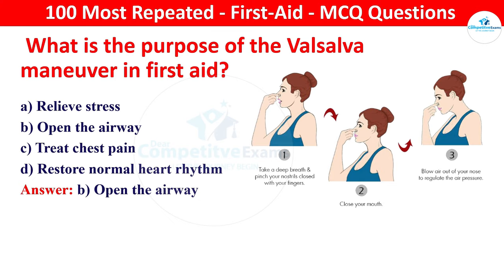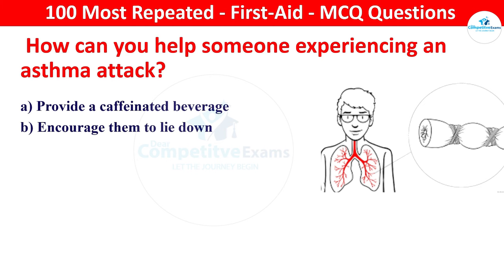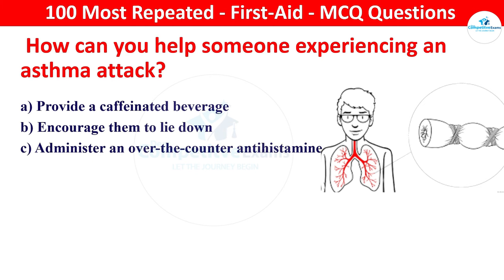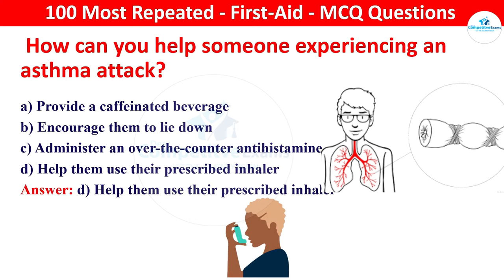Next question: how can you help someone experiencing an asthma attack? Your options: provide a caffeinated beverage, encourage them to lie down, administer an over-the-counter antihistamine, or help them use their prescribed inhaler. The right answer is help them use their prescribed inhaler. Using the prescribed inhaler is the primary intervention for relieving asthma symptoms during an attack.